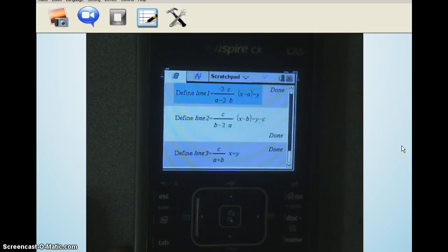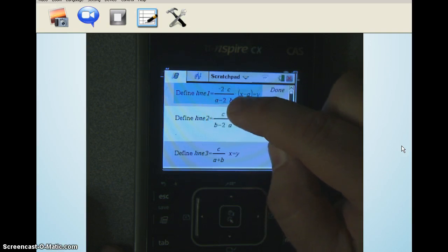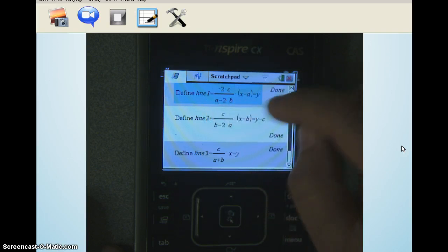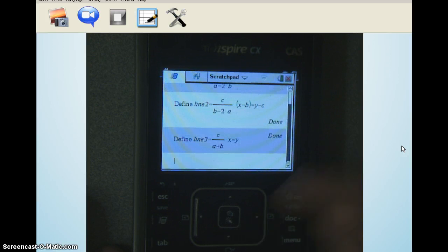So what we've done here is we've defined some variables. I used the command define, and I typed in a name for the variable line one is equal to, and I put in the value, and then I hit enter, and it told me okay, I know what line one is. It says done. And I did the same thing for line two, and I did the same thing for line three.